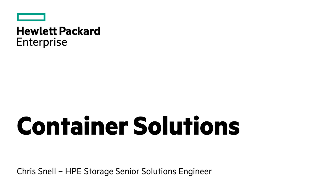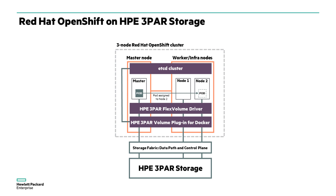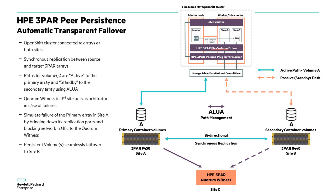This video is a continuation of the series on the HPE 3PAR volume plugin for Docker and our integrations with Kubernetes and Red Hat OpenShift. This demo will be done using OpenShift to create persistent volumes using the 3PAR plugin. The volumes will then be replicated between two sites using Pure Persistence. We will also simulate an array failure and how the OpenShift cluster and application volumes will behave using the automatic transparent failover technology from Pure Persistence.